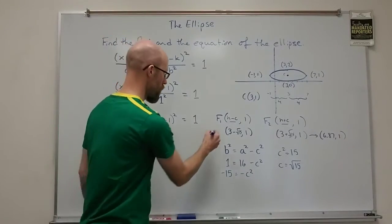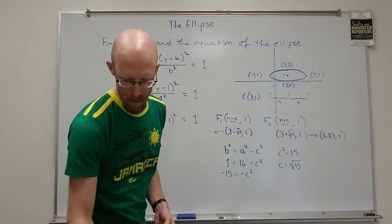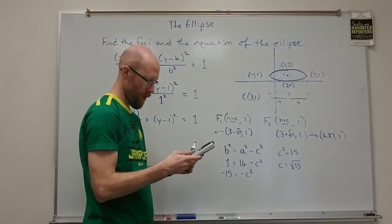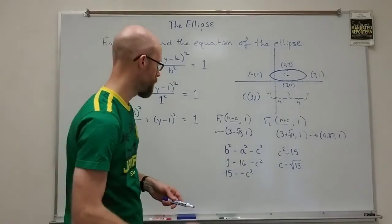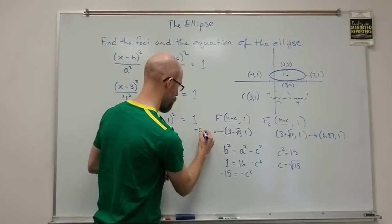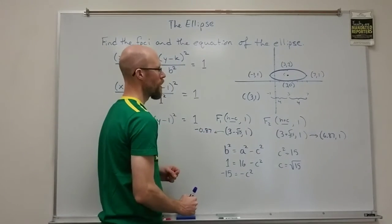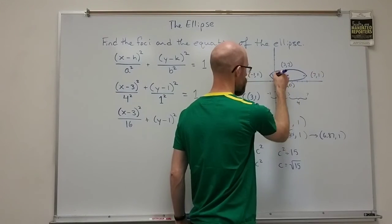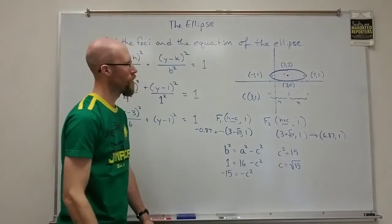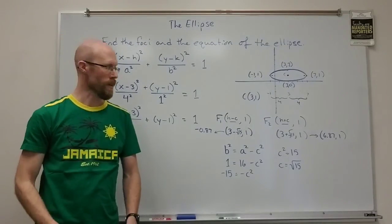And this one here I'll go the other way with that. That would be 3 minus root 15 which is about negative 0.87. Negative 0.87. And so those are going to be actually quite close to the vertices on that major axis.